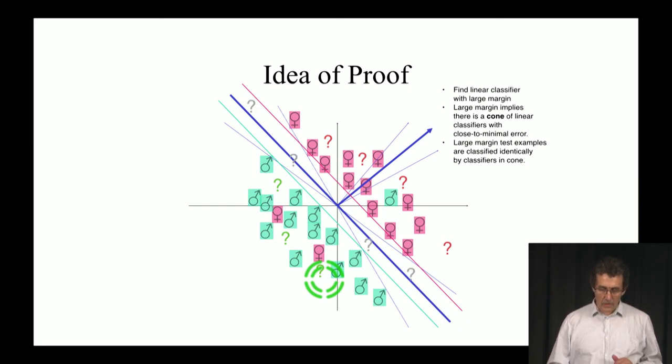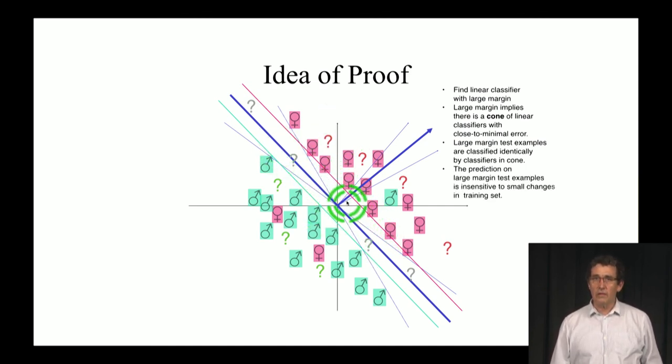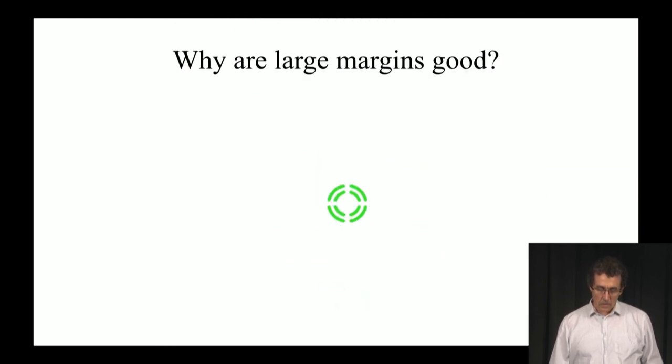On the other hand, if you have examples that fall within the small margin area, then those examples you are quite likely to predict differently if you get a slightly different training set. Those examples you are not confident about, but luckily in this case you don't really have too many of those examples, and so on most of the examples you can be very confident. If you had a lot of examples right in here, then you wouldn't have large margin. So, why are the large margins good?